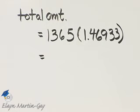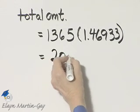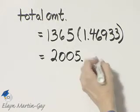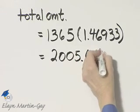Now, unlike the simple interest formula, this actually gives us the total amount and not just the interest. But I'll let you multiply, and if you multiply, and then you will approximate, we'll round it to two decimal places, you'll have 2005 rounded to two decimal places, decimal point 64.